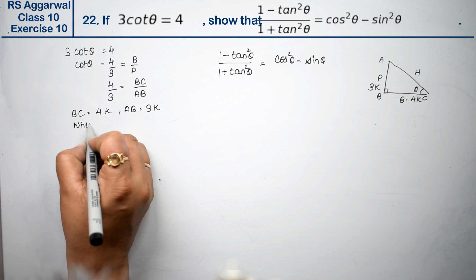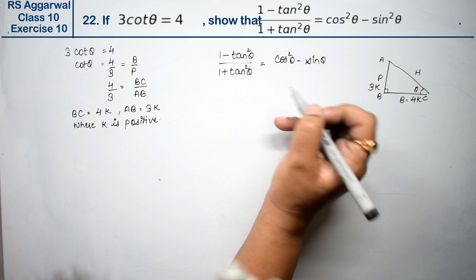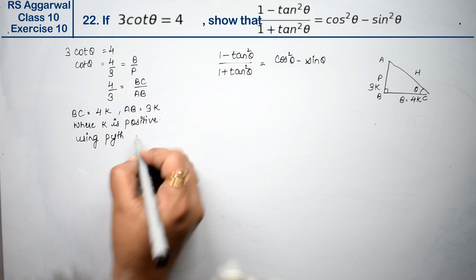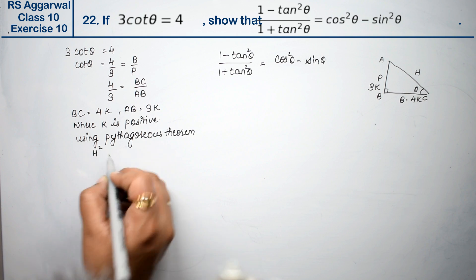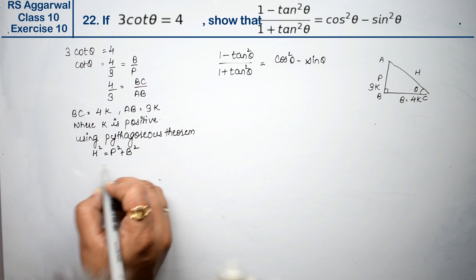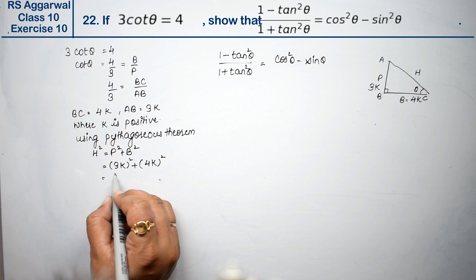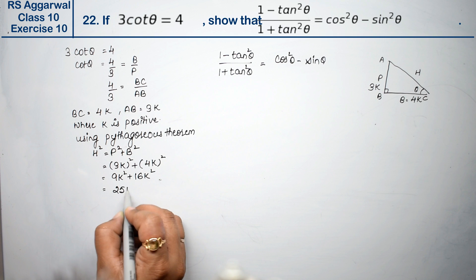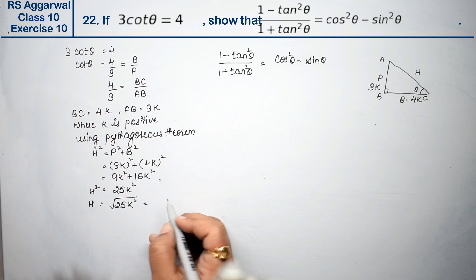So BC is 4k, and AB is 3k, where k is positive. Now we have to find cos and sin values. For cos and sin we have to find hypotenuse. Using Pythagorean theorem: h² = p² + b². So 3k whole square plus 4k whole square, which is 9k² + 16k², equals 25k².